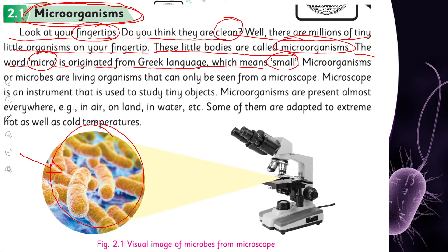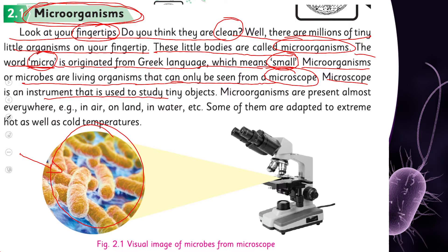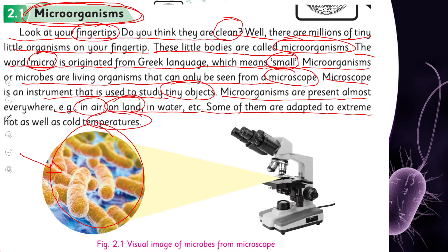'Micro means small. Microorganisms, or microbes, are living organisms that can only be seen through a microscope. A microscope is an instrument that is used to study tiny objects. Microorganisms are present almost everywhere — for example, in air, on land, in water, etc. Some of them are adapted to extreme hot as well as cold temperatures.'